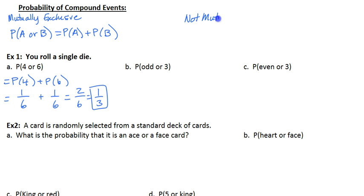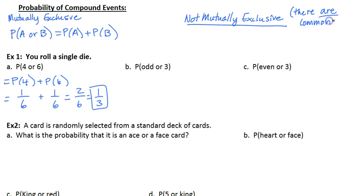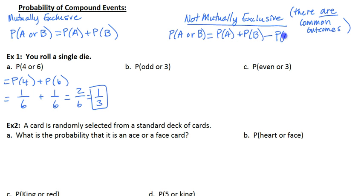If it is not mutually exclusive, we have a different formula. And sometimes this is confusing because it's a double negative — not mutually exclusive — meaning there are common outcomes; you can have both at one time. If it's not mutually exclusive, the probability of A or B is equal to the probability of A plus the probability of B, subtract the probability of A and B. This subtracted part is considered the intersection, or the overlapping parts of A and B.